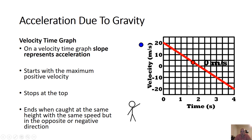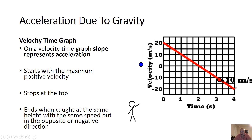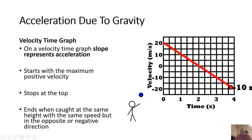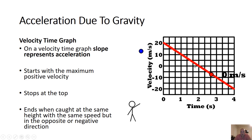Now let's look at a velocity-time graph. The velocity changes from 20 to 0 to negative 20 at the bottom. The ball is still being accelerated at 10 meters per second squared. The slope of a velocity-time graph is acceleration, so if I take the slope anywhere on this line, the velocity changes by 10 in the negative direction every second, giving an acceleration of negative 10 meters per second squared.